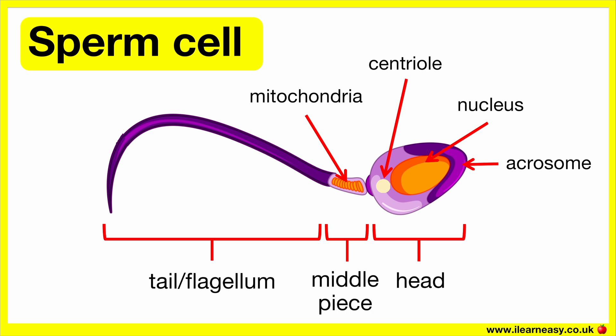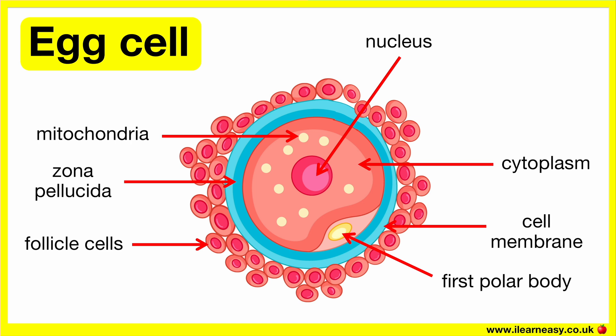In summary, sperm cells are adapted for reproduction by having a streamlined shape for movement, a tail for swimming, and an acrosome that contains enzymes to help penetrate the egg during fertilisation. Egg cells are adapted for reproduction by being large and nutrient-rich to support early development, with a protective zona pellucida and follicle cells that aid in fertilisation and provide nourishment.